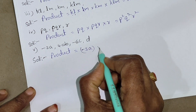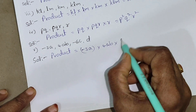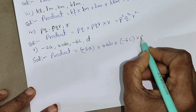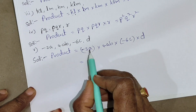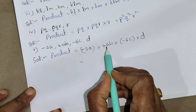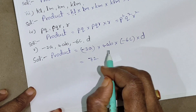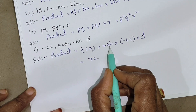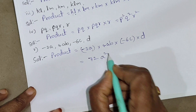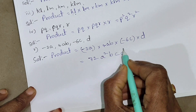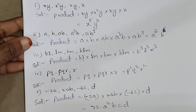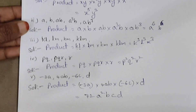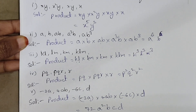Fifth one: minus 3a, 4ab, minus 6c, d. Product equals minus 3a into 4ab into minus 6c into d. Minus into minus gives plus. 3 fours are 12, 12 sixes are 72. a into a gives a squared. So the product is 72a squared bcd.